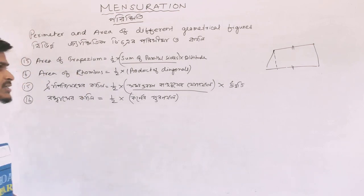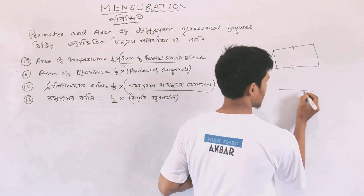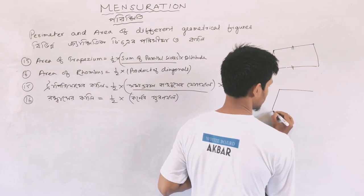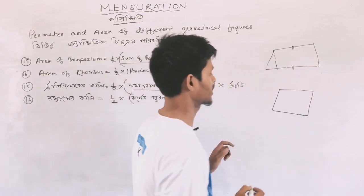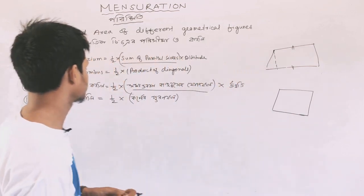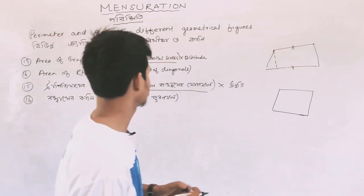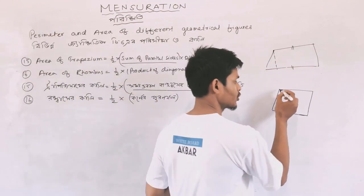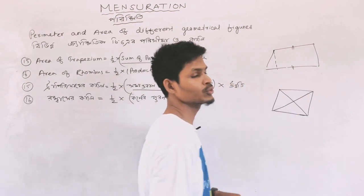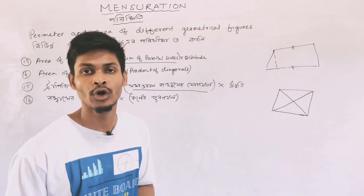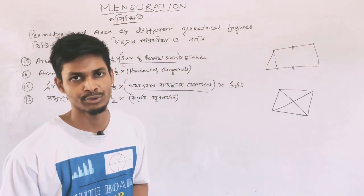For area of rhombus: in a rhombus, all sides are equal. The formula is half into the product of both diagonals. So area of rhombus = half × diagonal₁ × diagonal₂.